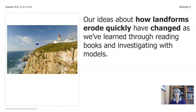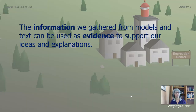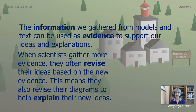Our ideas about how landforms erode quickly have changed as we've learned through reading books and investigating models. The information we've gathered from models and text can be used as evidence to support our ideas and explanations. When scientists gather more evidence, they often revise their ideas based on the new evidence. This means they also revise their diagrams to help explain their new ideas.